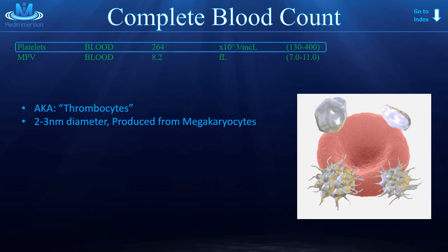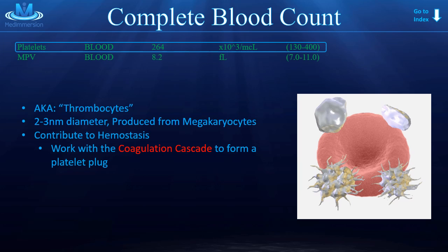Platelets contribute to hemostasis — our body's ability to stop bleeding. They work with the coagulation cascade to form a platelet plug, and they do this in three stages. First, they adhere to damaged endothelium. Then they activate themselves — you can see inactivated platelets on top and activated platelets on the bottom. The activated platelets look stickier because of the dendrites, the little fingers that help them stick together. And lastly, they aggregate — more and more platelets come to the rescue and clump together to form that plug.